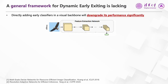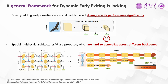However, designing a model that can perform dynamic early exiting is a challenging task. Researchers have found that if we directly append intermediate classifiers in a visual backbone like ResNet, the performance of the final exit will downgrade significantly, and the classifiers would interfere with each other. To solve this problem, some multi-scale structures have been proposed. Despite their effectiveness, such specially designed architectures are hard to generalize across different backbones. Ideally, we hope to empower any backbone with the ability of early exiting instead of designing a specific architecture from scratch.